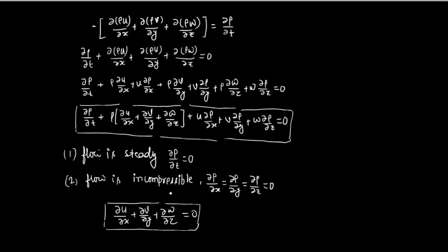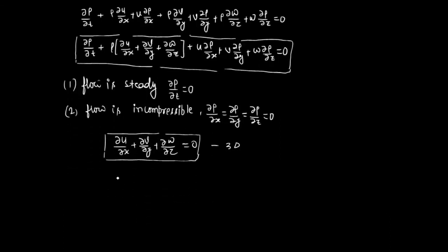This equation ∂U/∂x + ∂V/∂y + ∂W/∂z = 0 is also valid for one-dimensional, two-dimensional, and three-dimensional flow. For a 2D system, it reduces to ∂U/∂x + ∂V/∂y = 0, since the term in the Z direction is zero. For a 1D system it further reduces to ∂U/∂x = 0. So these are for 3D, 2D, and 1D steady incompressible flow respectively.